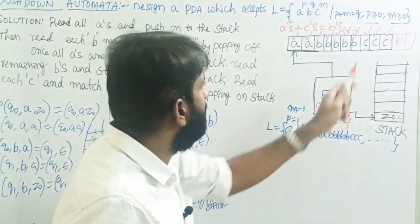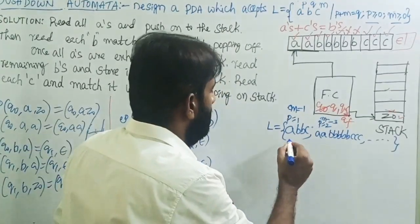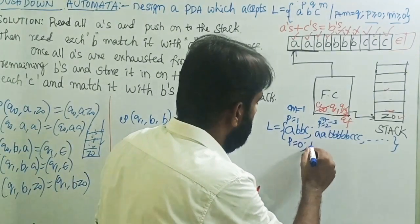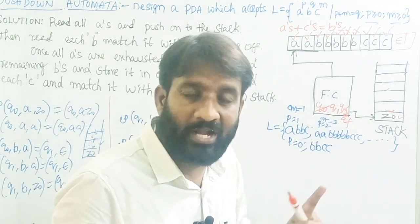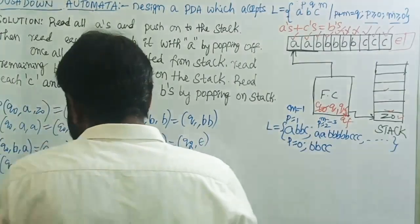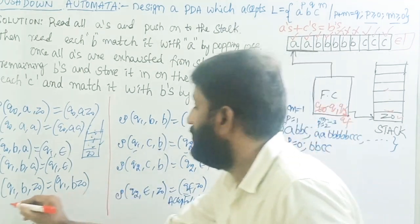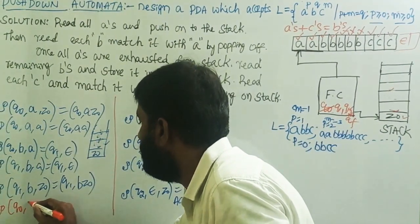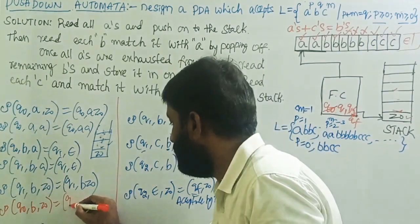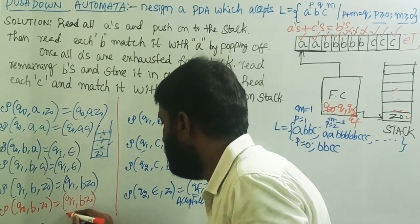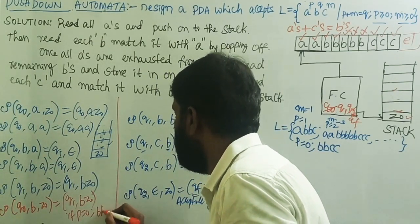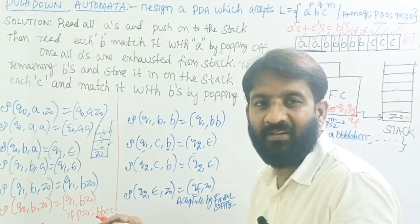Now consider the case where P is greater than or equal to zero. If P equals zero, there are no A's in the string — only B's followed by equal C's. To handle this, we add the transition: Q0 with input B and top of stack Z-naught equals Q1 with B Z-naught. This handles strings like double B followed by double C, or triple B followed by triple C, and so on.